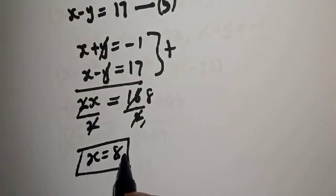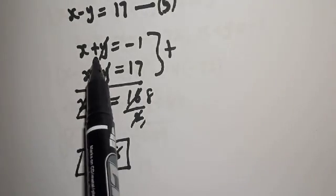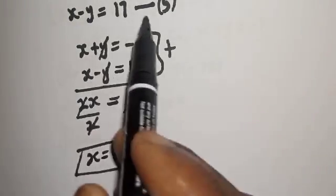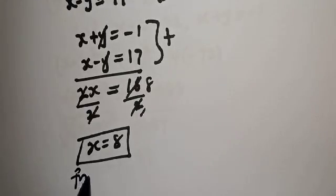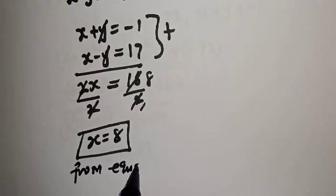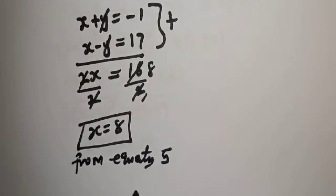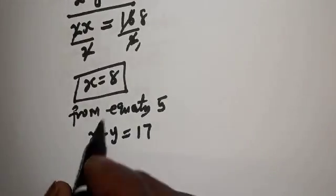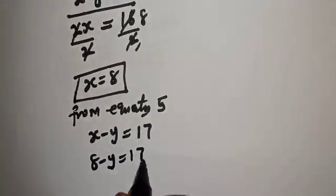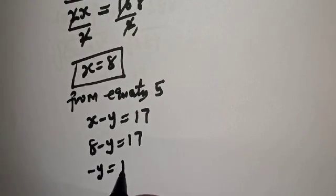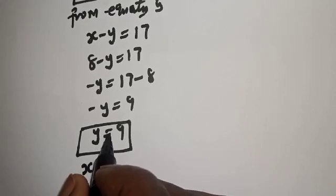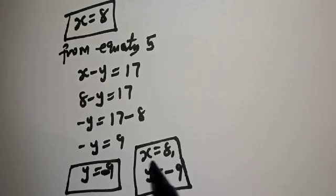We've found the value of S, which is 8. Let's substitute for S in equation 5 to get the value of Y. From equation 5, S minus Y equals 17. When S equals 8: 8 minus Y equals 17, so minus Y equals 9, therefore Y equals minus 9.